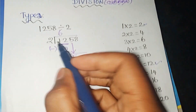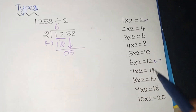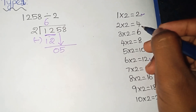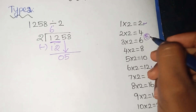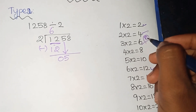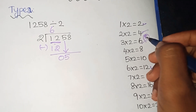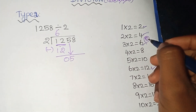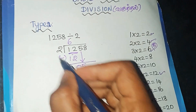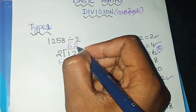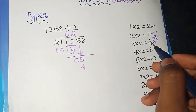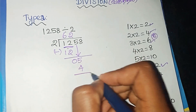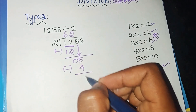So, you should check the 2nd table. How many 2's are 5? There is no 5 in the 2nd table directly. You should not take a number greater than 5 — the next number would be 6. Less than 5 is 4, so you should take 4. Next step is subtraction: 5 minus 4 is 1.